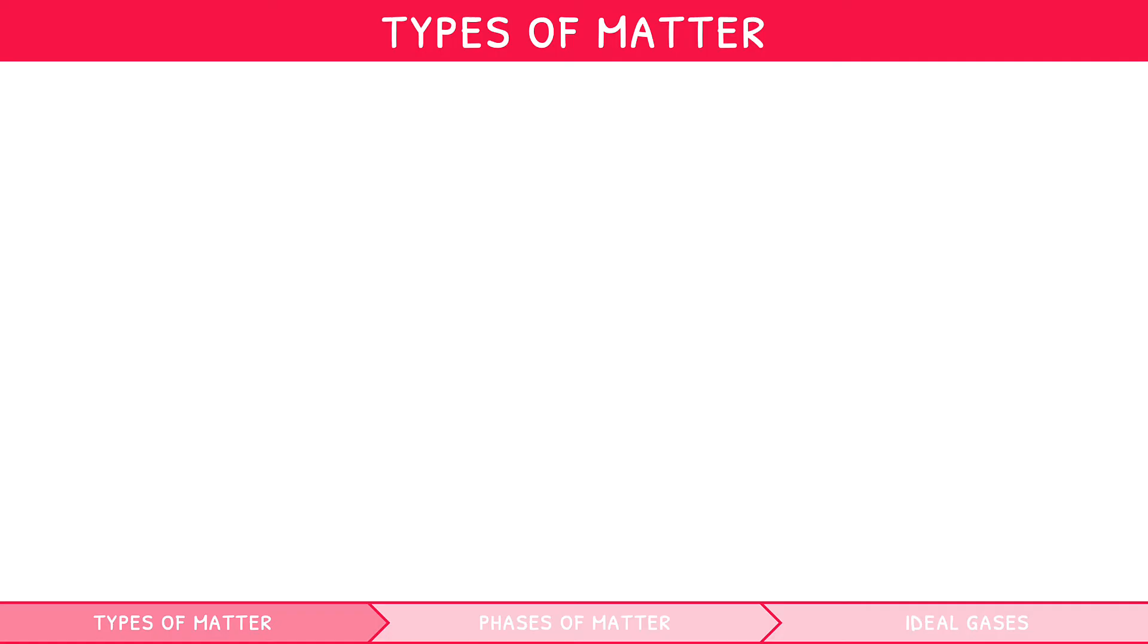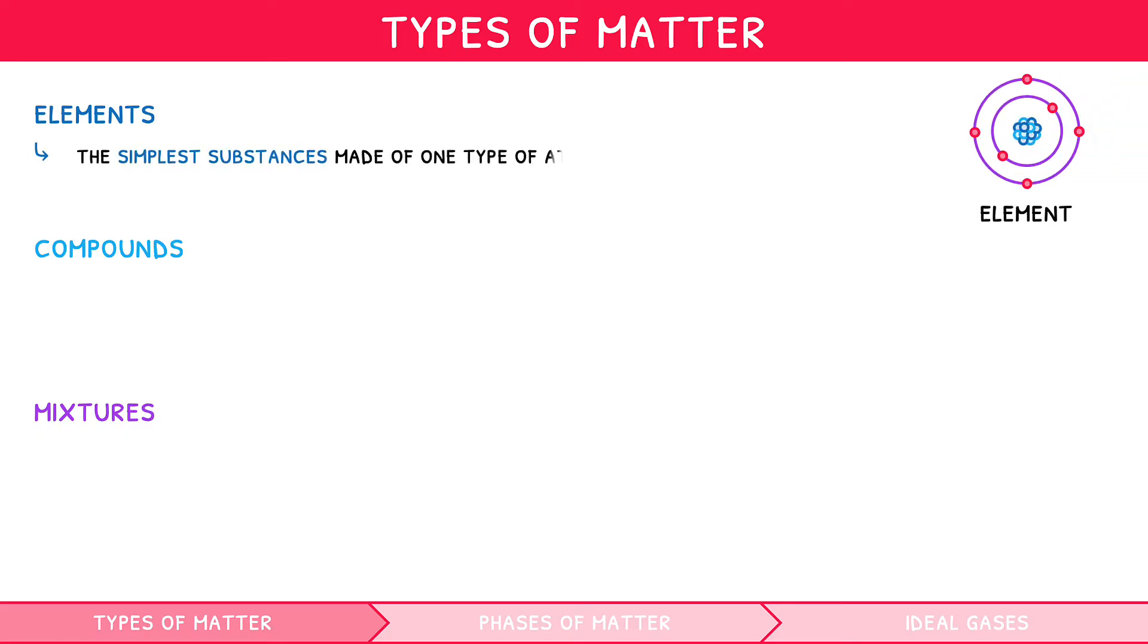All matter can be categorized into three distinct groups. These are elements, compounds, and mixtures. Elements are considered the simplest of matter and are made of only one type of atom. As a result, they cannot be broken down into smaller or simpler particles.